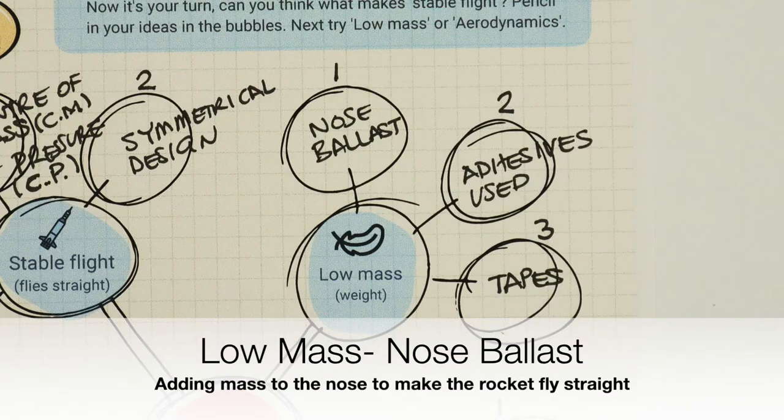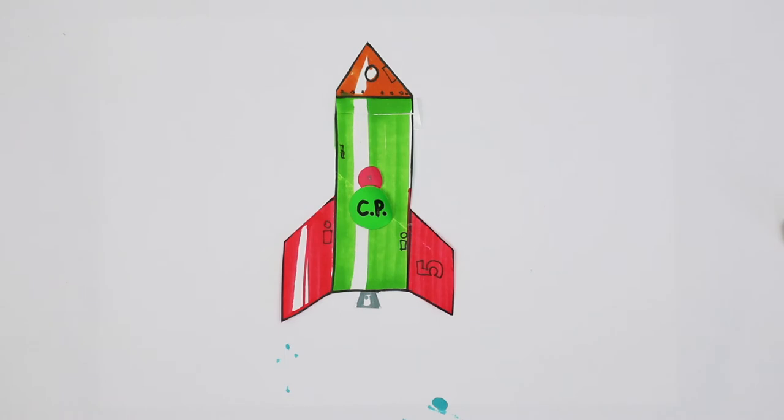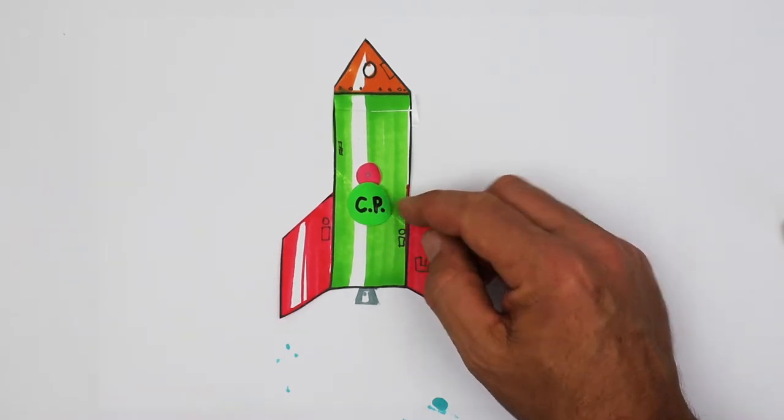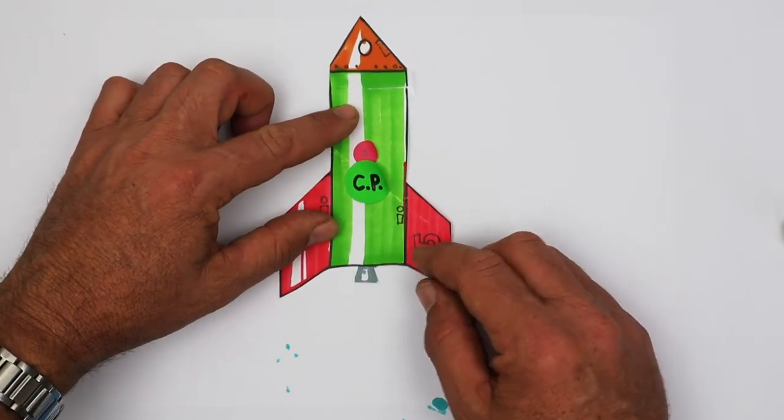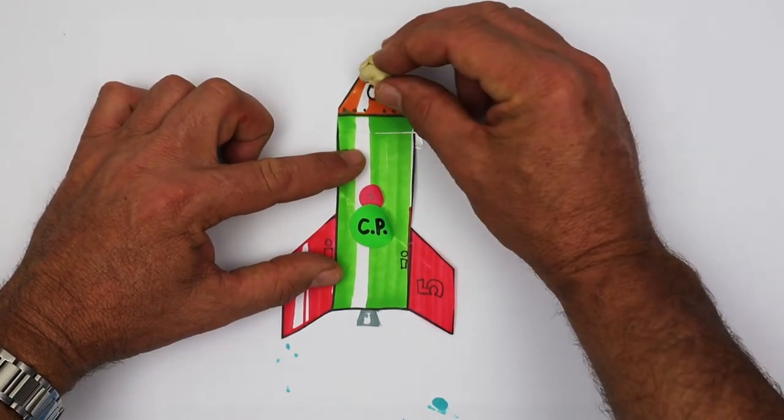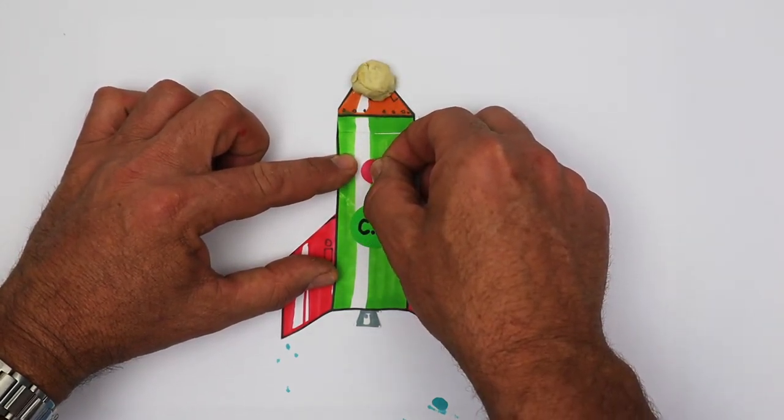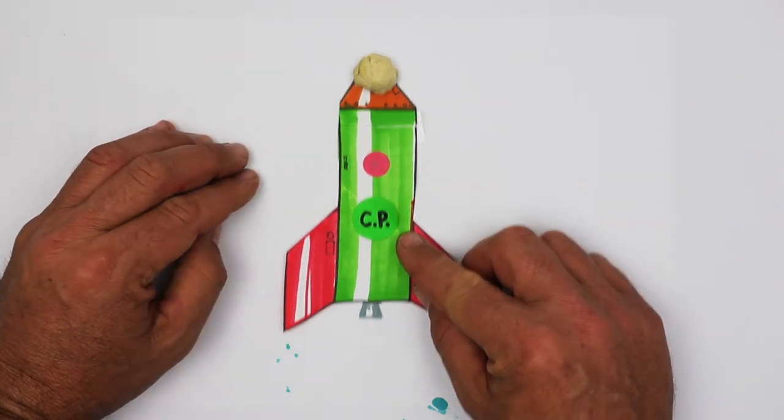The next key is keeping the weight down, low mass. A light rocket is a fast rocket. Let's start off with number one, nose ballast. But sometimes we will need to add weight. In this rocket, the centre of mass is really close to the centre of pressure, which you know means that it's going to be an unstable rocket. We can adjust where the centre of mass is by adding some weight to the top. Now the centre of mass moves closer up, and that distance means that it will be more stable.